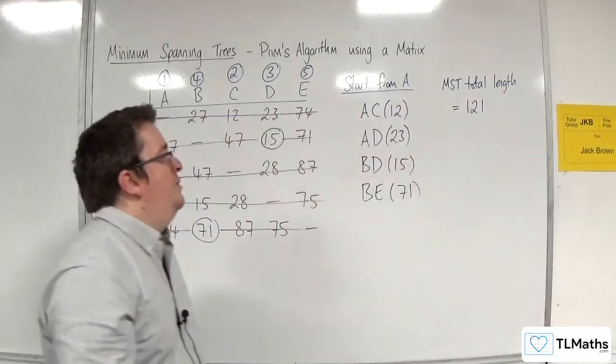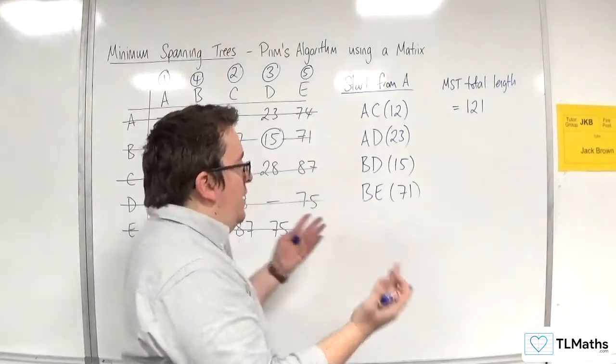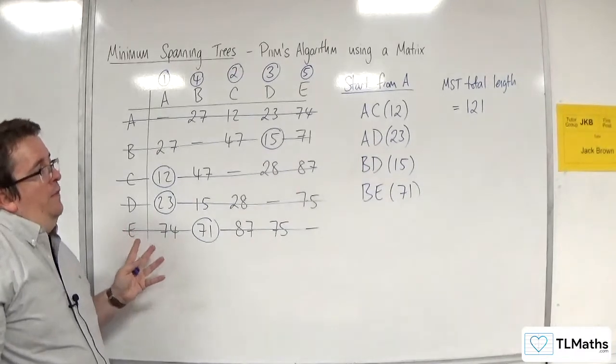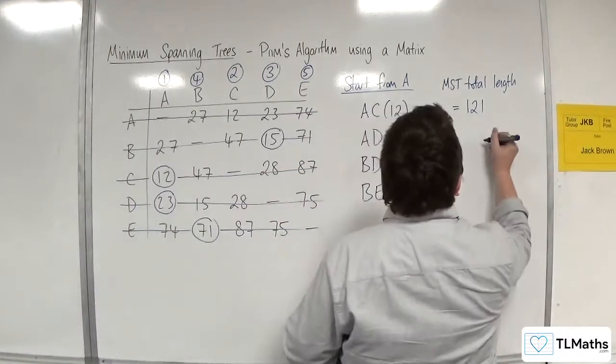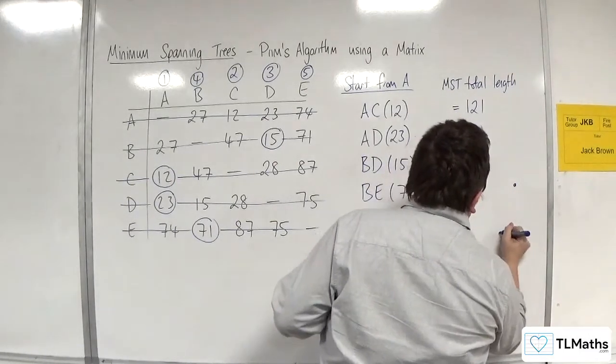Now you could get asked to draw the minimum spanning tree for this. Now because you don't already have a network, or you might not have a network, that means that I can just draw my points wherever I like. So A, B, C, D, E.